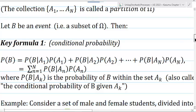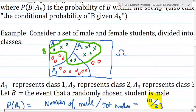Here we have a partition A1, A2, A3. Here we have an event B, and we want the probability of the entire event B in terms of the events conditioned on the different sets in the partition.